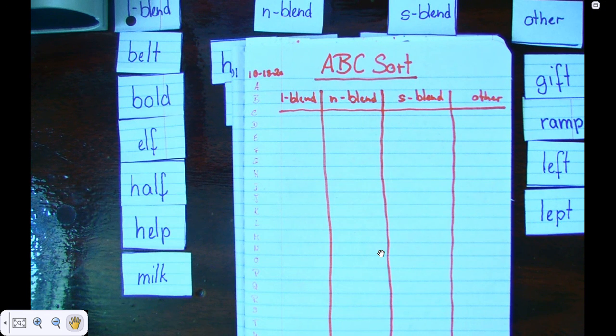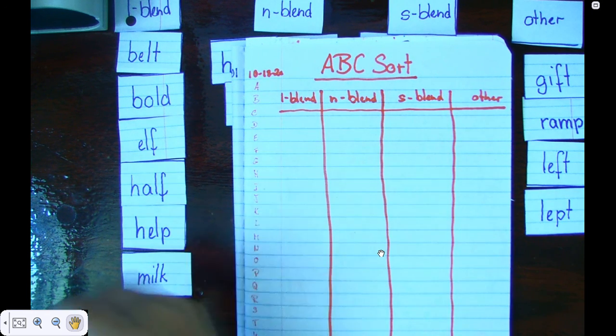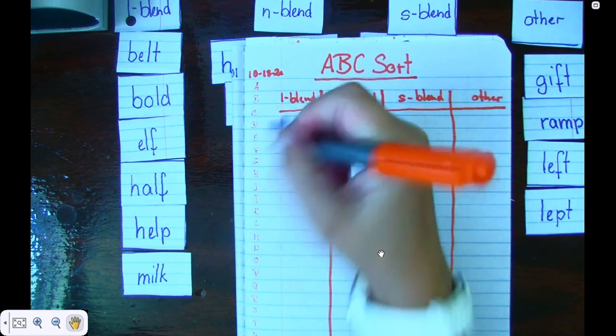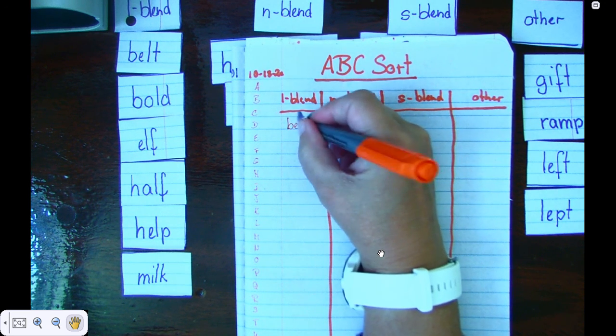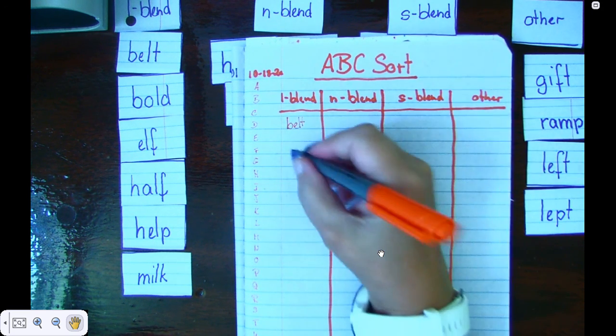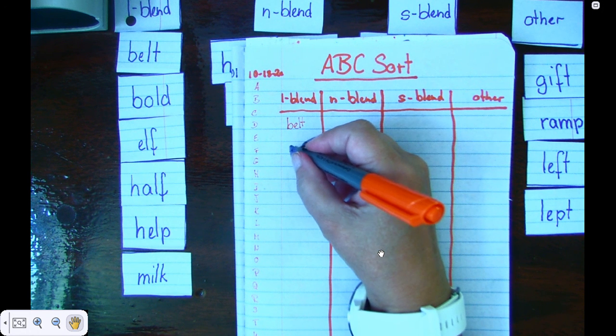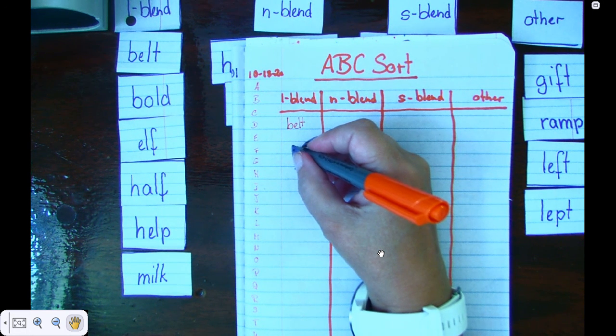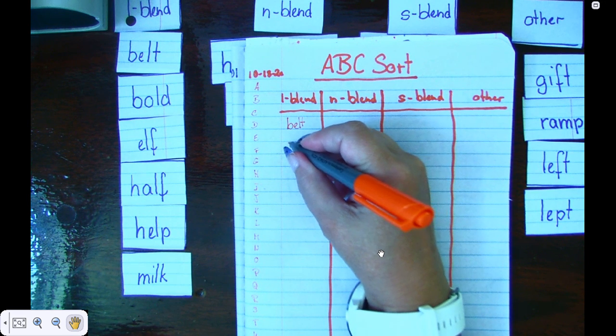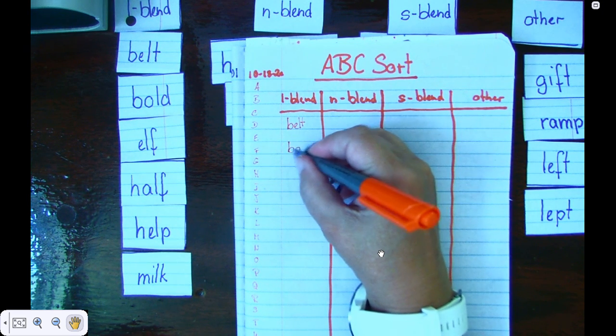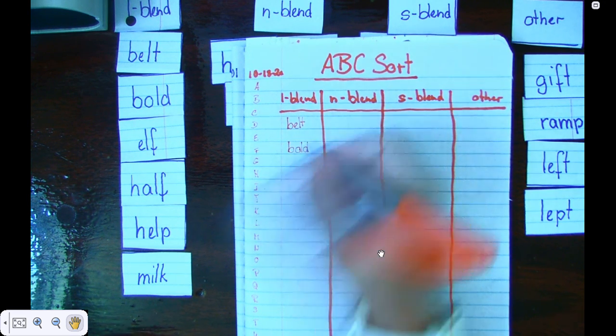Now that I've sorted them, you need to write them down. And you know the way we write them down is we write the first word, belt, and then we skip a line to help us with the below-the-line and tall letters so they don't interfere. And then we write the next word, bold.